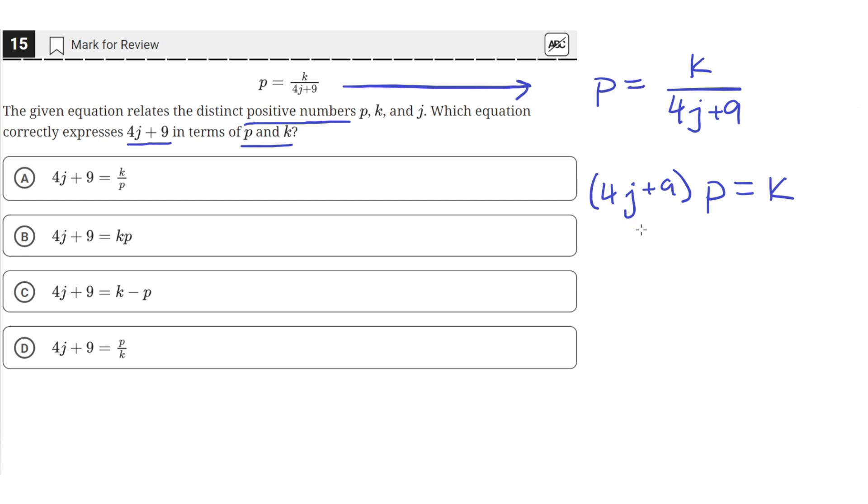Okay, so now that we have this term, we need to get 4j plus 9 alone, so we can just divide both sides by p. So then this would just be 1, so we'll just be left with 4j plus 9 equals k over p.